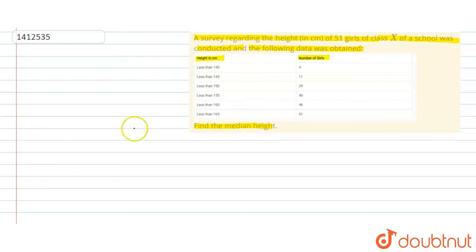I am just a table given that is for less than data. So, the first thing we will do is convert this to normal table. The first column is height which is in centimeter. The second column is number of girls which is denoted by fi.